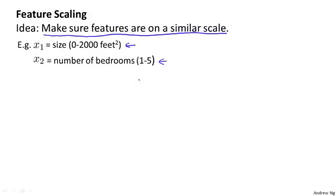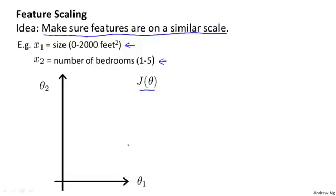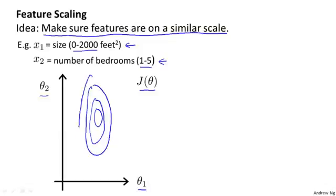If you plot the contours of the cost function j of theta, then the contours may look like this. J of theta is a function of parameters theta 0, theta 1, and theta 2. I'm going to ignore theta 0 and pretend it's a function of only theta 1 and theta 2. But if x1 can take on a much larger range of values than x2, it turns out that the contours of the cost function j of theta can take on this very, very skewed elliptical shape.